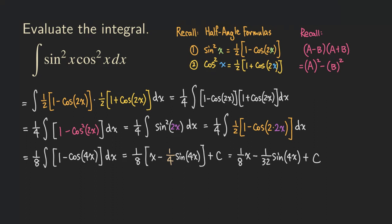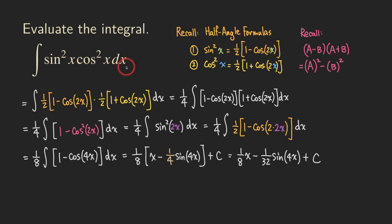It's actually not too bad, assuming you have the half-angle formulas handy. There is another approach: use the double-angle formula to rewrite sine squared x times cosine squared x as a single expression, so you only need to apply the half-angle formula once. I'll do another video on this same integral using that different approach.